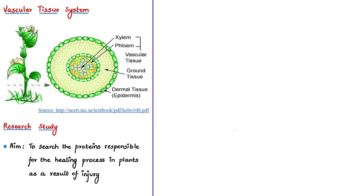Before seeing some of the highlights of the research, let's first look at the anatomy of a plant. The basic unit of plants is cells; groups of cells are called tissues. A plant is made up of different kinds of tissues, classified into three types of tissue systems. One such type is the vascular tissue system, or conducting tissue system. Within this, there are two types: xylem, which transports water and dissolved minerals, and phloem, which transports food.